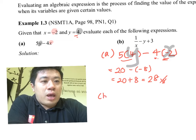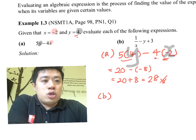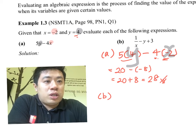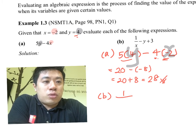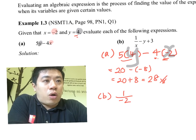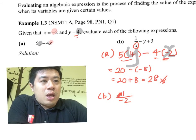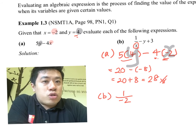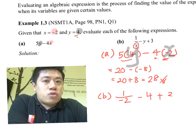For part (b), we have 1 over x minus y plus 3. Again, we are substituting the value of x, so our x is now substituted with negative 2. We have negative 2 here. My y is substituted with 4, so we have minus 4 plus 3.